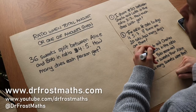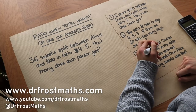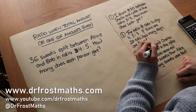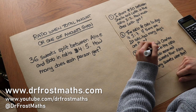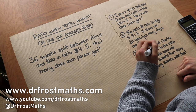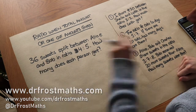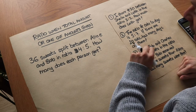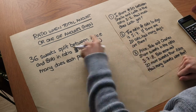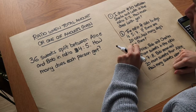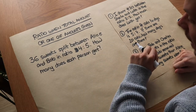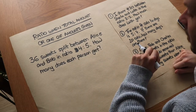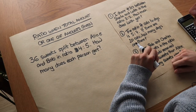Hello and welcome to this video on ratio when the total amount or one of the amounts is given. Let's suppose we have 36 sweets and it's split between Alice and Bob in the ratio 4 to 5. How many sweets does each person get?